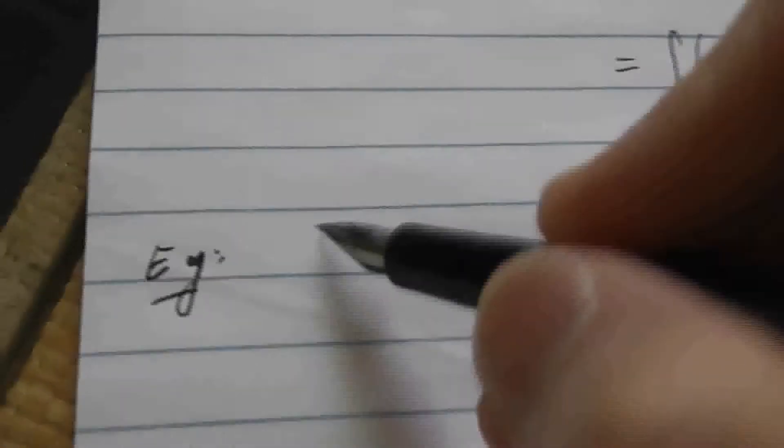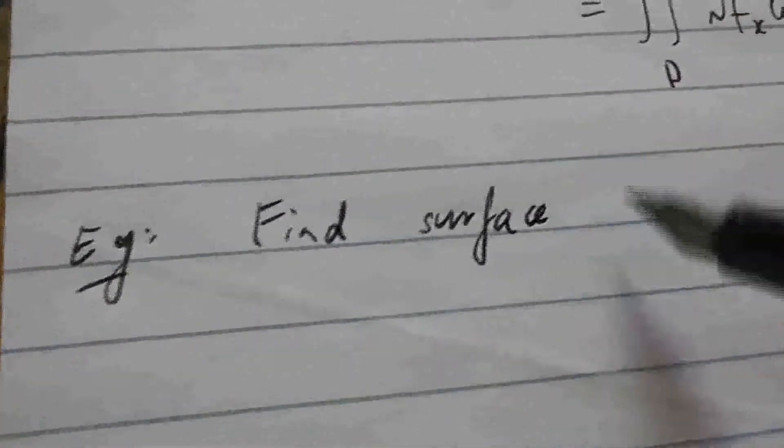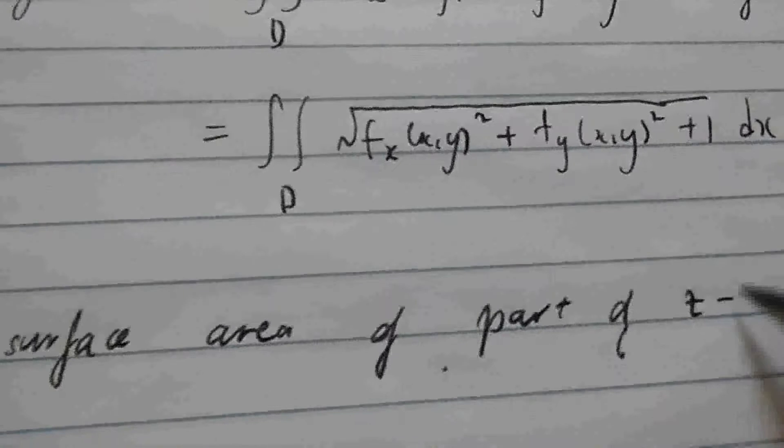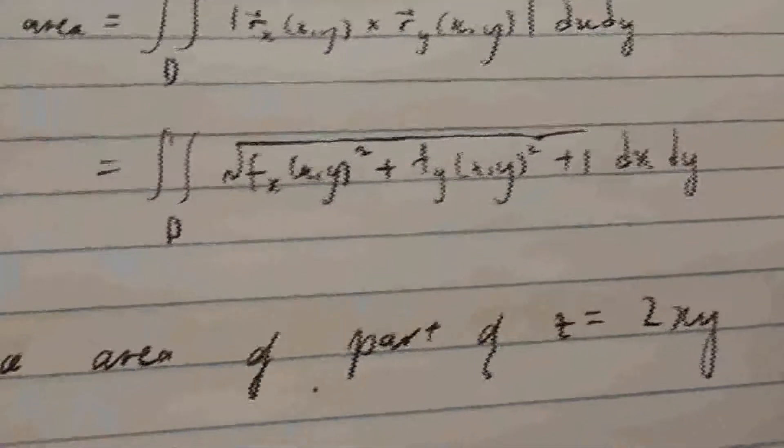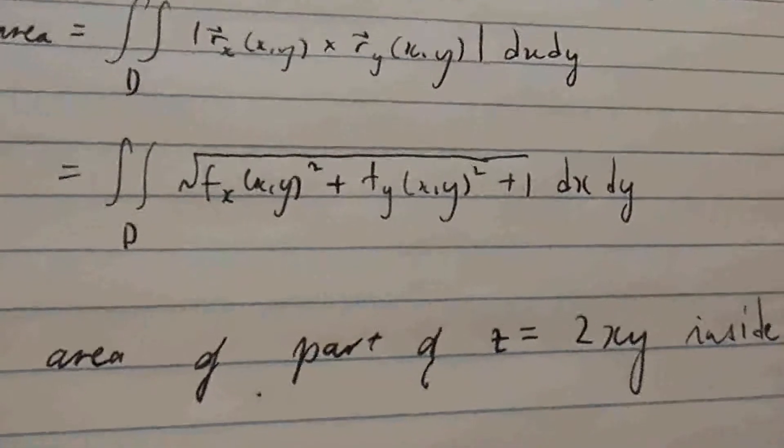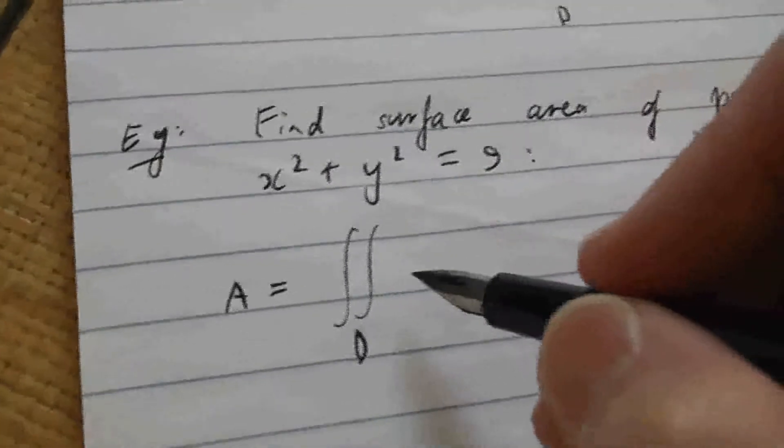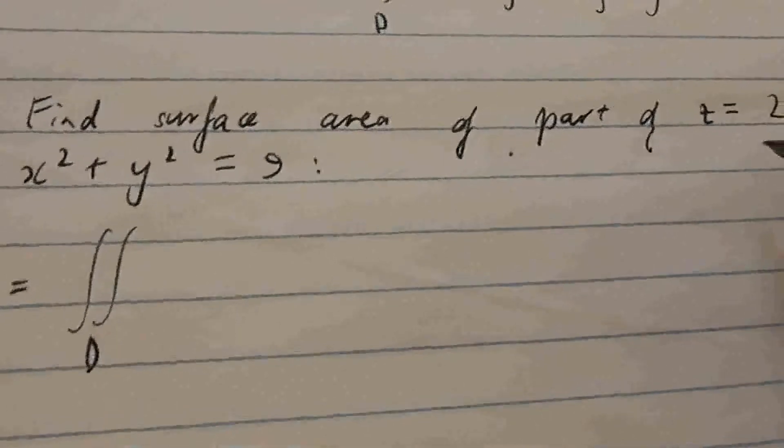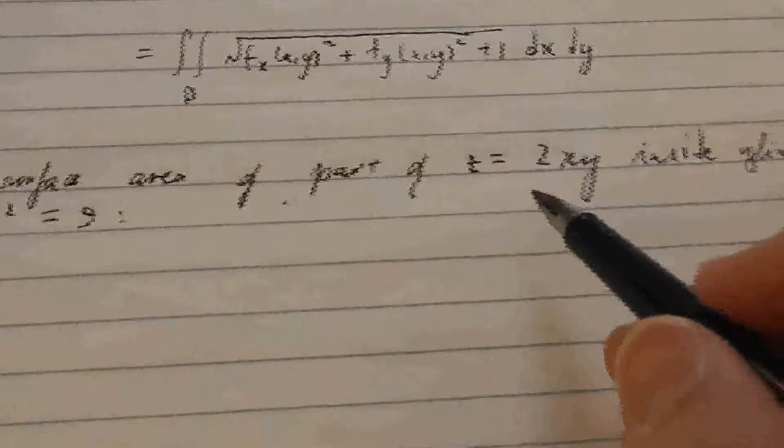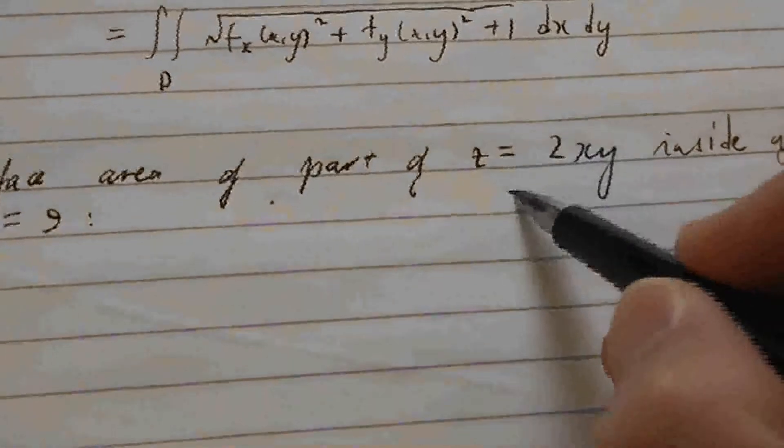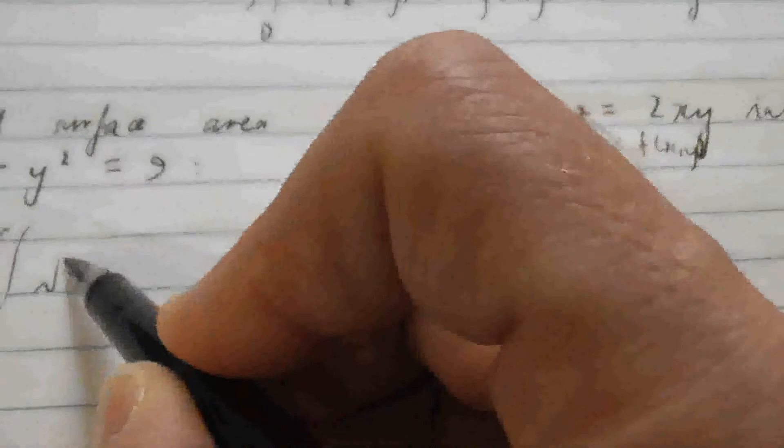Let's see. Find the surface area of the part of z equals 2xy inside the cylinder x squared plus y squared equals 9. So the area, immediately we can write down this thing. So there's some region D. And here, what is our f of x, y? Well, z is equal to a function of x and y. Now, this is our f of x, y.